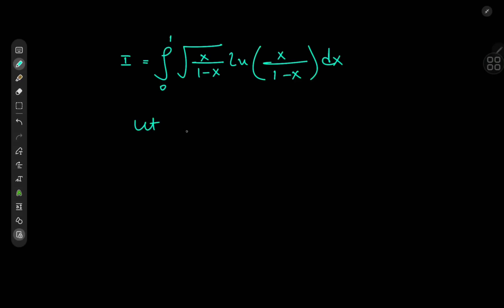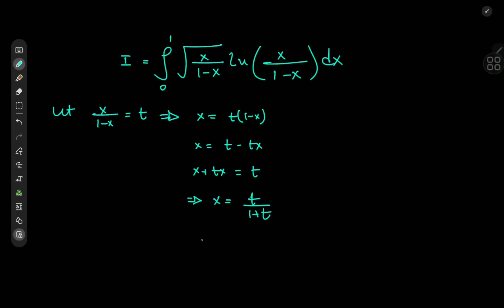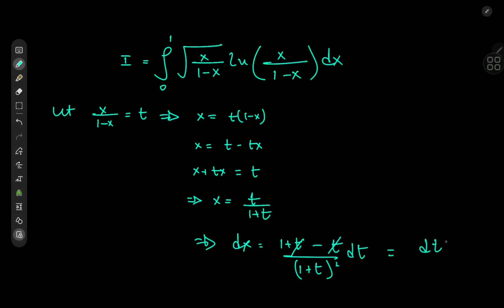I would normally just let x divided by 1 minus x equal t. This means that x equals t times 1 minus x, and solving for x gives x plus tx equals t, implying that x equals t divided by 1 plus t. Differentiating gives dx equal to 1 plus t minus t, all divided by 1 plus t squared, dt. So the differential element transforms to dt divided by 1 plus t squared.